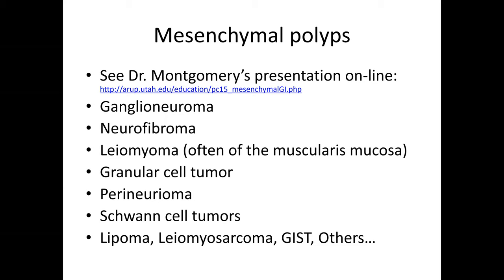The kinds of lesions we encounter in this situation include ganglioneuroma, neurofibroma, leiomyomas of the muscularis mucosa — fairly common — granular cell tumor, which is less common, perineuroma, Schwann cell tumors including Schwannoma and mucosal Schwann cell hamartoma, lipoma, and leiomyosarcoma, along with other less commonly encountered malignancies.